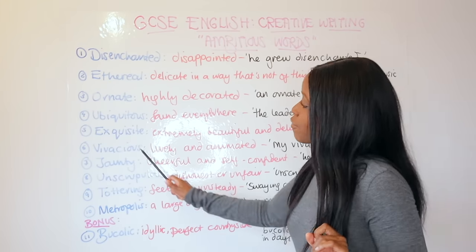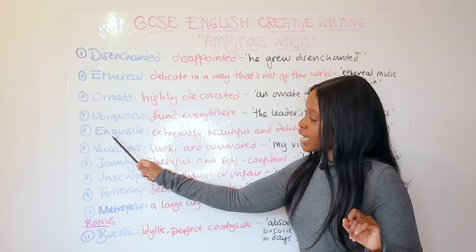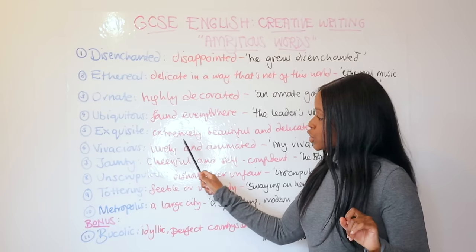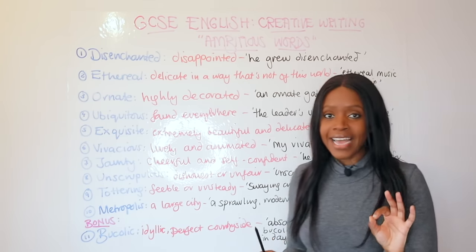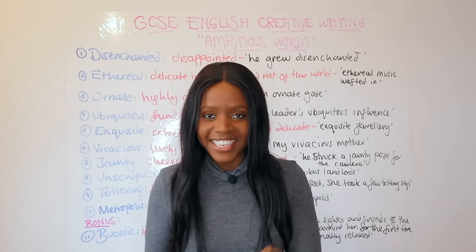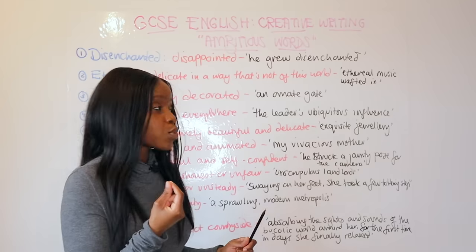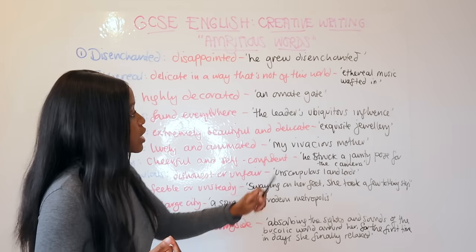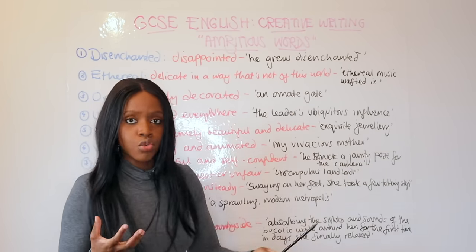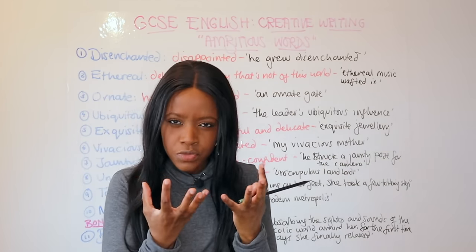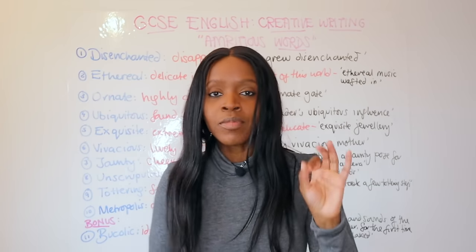The fifth ambitious word is 'exquisite,' which means extremely beautiful and delicate. You could use it to describe exquisite jewelry or anything that looks very beautiful but also in a very delicate way.